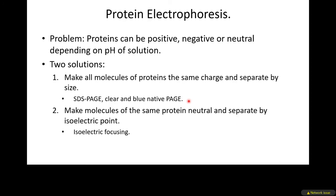Now moving to protein electrophoresis, which is the majority of electrophoresis in most research labs. The problem is that a protein can be positive, negative, or neutral depending on pH. The most common solution is SDS-PAGE — sodium dodecyl sulfate polyacrylamide gel electrophoresis — which makes all protein molecules carry the same charge and separates them by size. You can also do clear and blue native electrophoresis for protein complexes, or separate proteins by isoelectric point using pH gradient gels in a technique called isoelectric focusing.